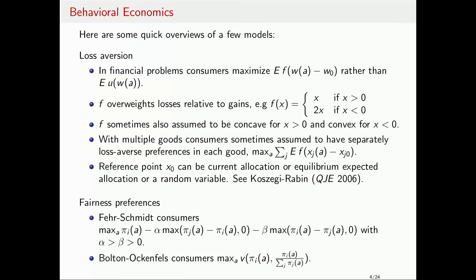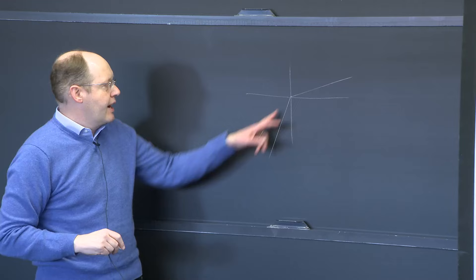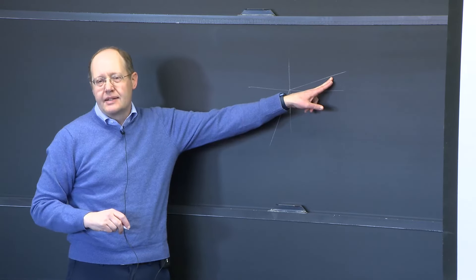For instance, loss aversion. In financial problems, the rational model has a consumer taking action A with some wealth W(A), a random variable, and they maximize expected utility of wealth. In loss-averse models, consumers have a reference point W₀ — which could be their current wealth — and try to maximize an expected function of W(A) minus W₀. So you have utility not for wealth but for changes in wealth, with zero being a special point. The simplest version is a utility function where you care much more about losing money than gaining money.